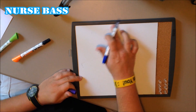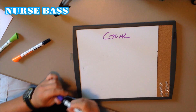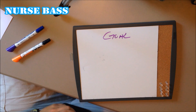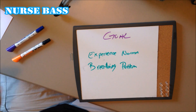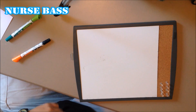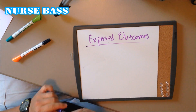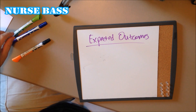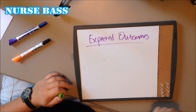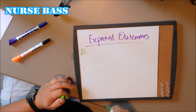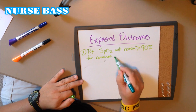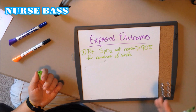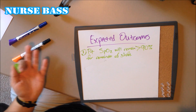The next piece of the nursing care plan is your goals — basically one goal for the patient. If our diagnosis statement was that the patient has an ineffective breathing pattern, our goal is simply that they're going to experience a normal breathing pattern. The third piece is your expected outcomes — this is where you write down different expected outcomes you plan to maintain while caring for the patient that day. For example, one outcome: the patient's O2 sats will remain above 90% for the remainder of the shift.